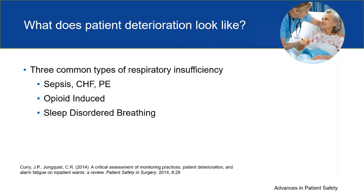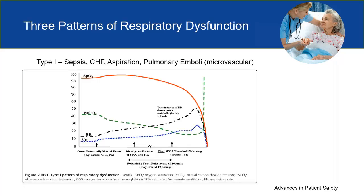What does patient deterioration look like? There are three main types of respiratory insufficiency that result in arrest and patient harm. Type 1 is a rapidly evolving clinical cascade usually related to sepsis, CHF, aspiration, or pulmonary emboli — all involving the microvascular system. Early in this trajectory, you will see a rise in respiratory rate and minute ventilation. As the disease entity progresses, you'll see a decrease in CO2 and eventually a decrease in SpO2.